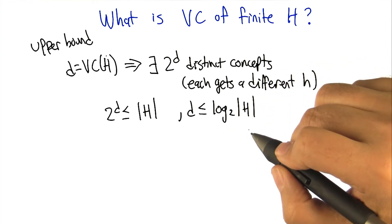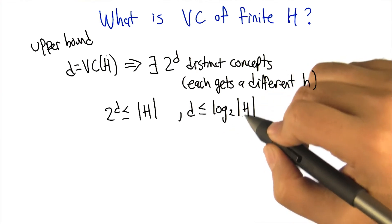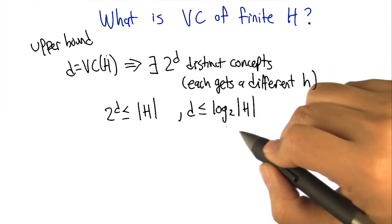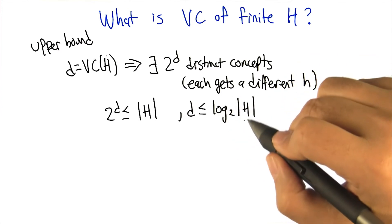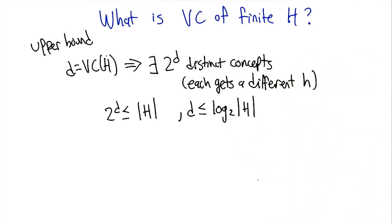And that's what we were seeing in the other direction as well, that the log of the hypothesis size of the hypothesis space was kind of playing the role of the VC dimension in the bound. Okay, that makes sense.